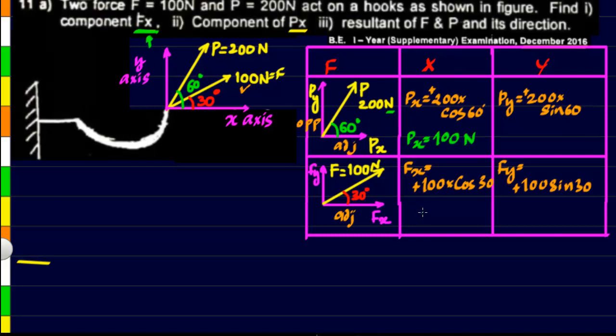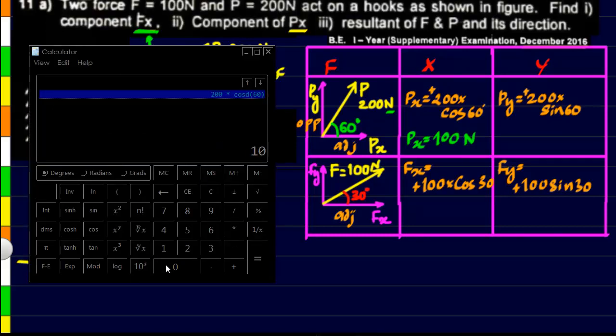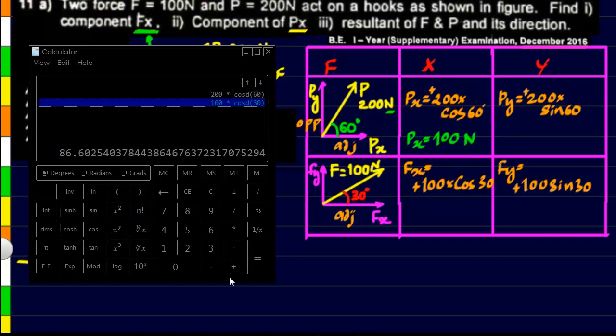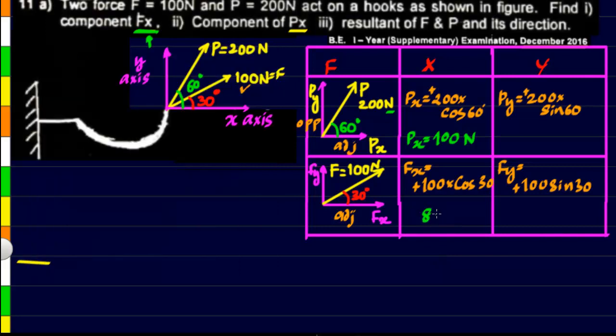Next we have to find the x component of the force F. Let us calculate it here. So that is 100 into cos 30, and that gives us 86.60, 86.60 newtons. This is the value of Fx.